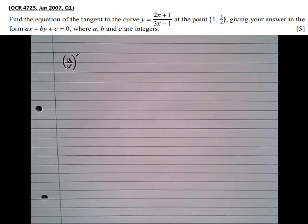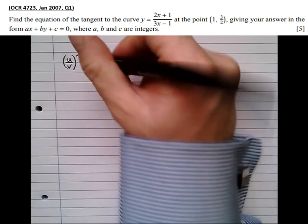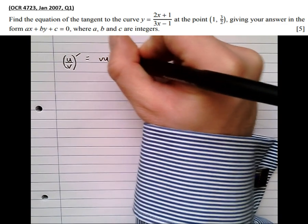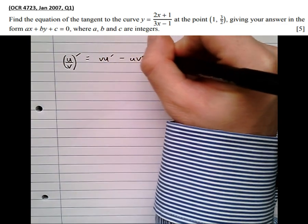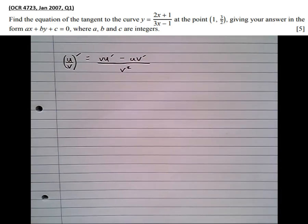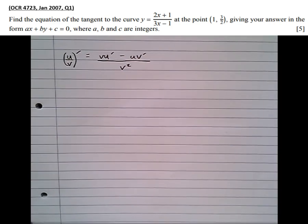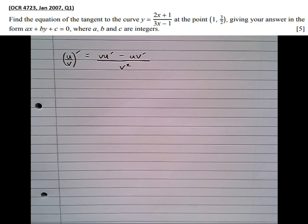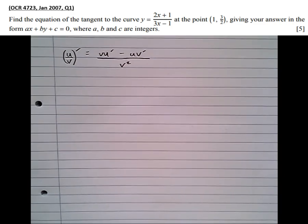And the rule is, to differentiate u over v, u over v dashed, it's v u dash minus u v dash over v squared. But don't worry, you don't need to remember this rule. It's given on your formula sheet at either the front of the exam paper or in the formula booklet, depending on what exam board you do.